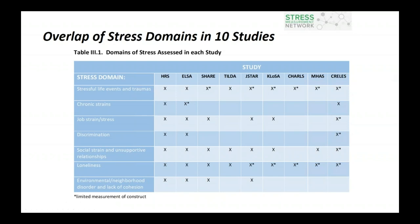The first effort, led by Tara Grunewald, looked across HRS and nine other studies — including ELSA, SHARE, HILDA, JSTAR, CLOSA, CHARLS, AMHOS, and KLoSA — across different stress domains to see which studies also have measures in addition to HRS. The table shows, for example, that stressful life events are captured in all studies. However, if you look at chronic strains or chronic stress, there are very few — only three studies actually capture chronic stress. This was our initial attempt to see what we actually have across these 10 groups of studies.